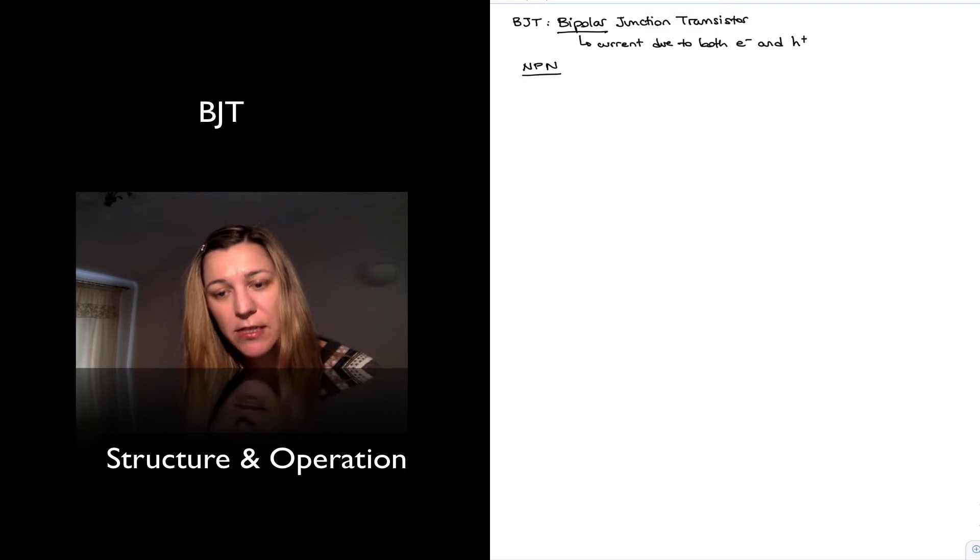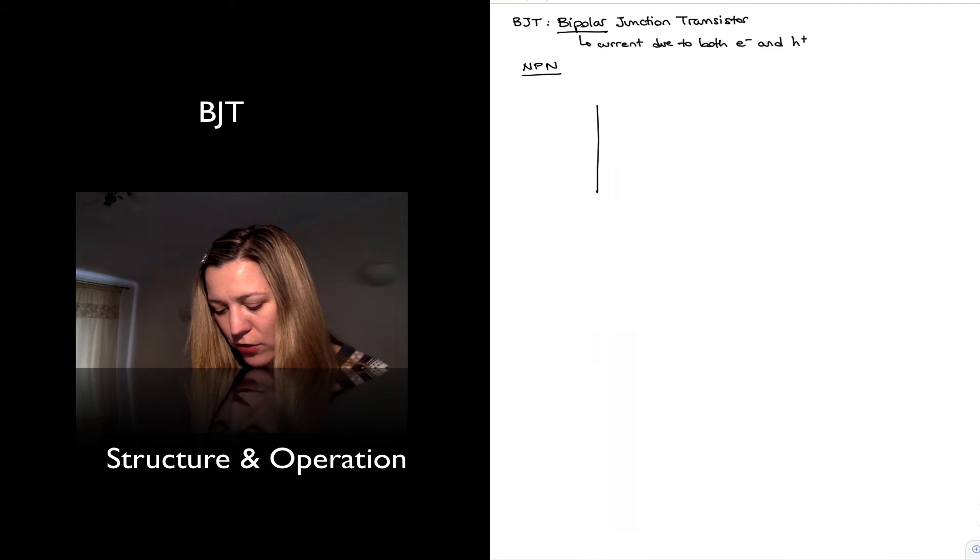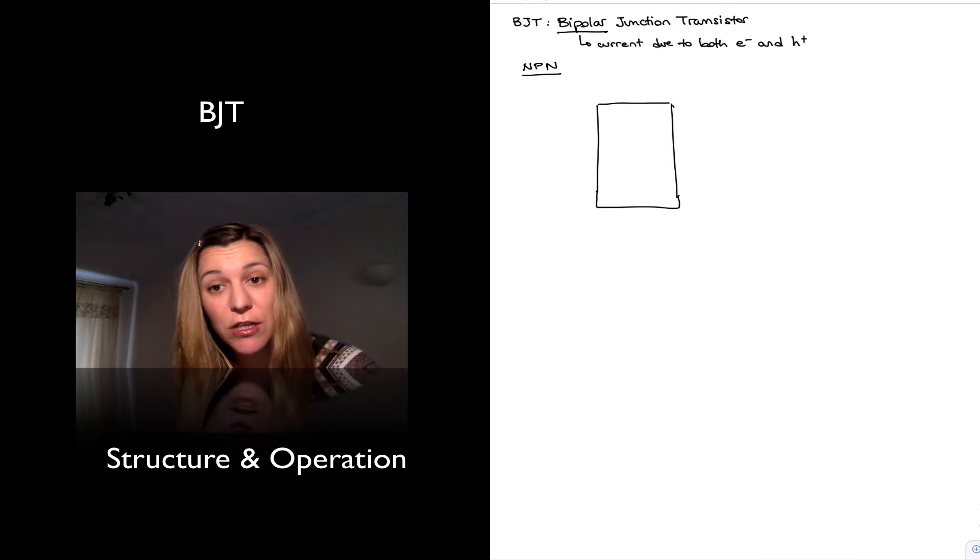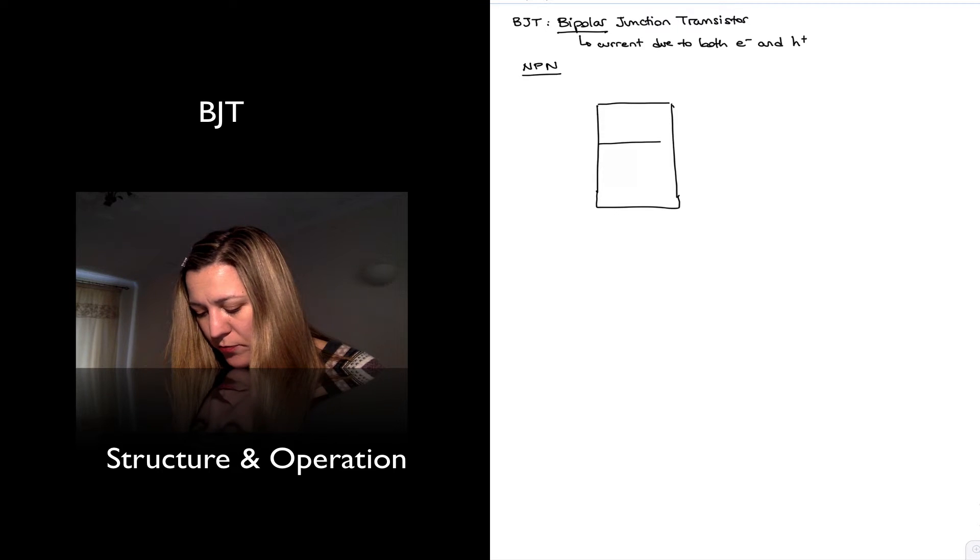As the name suggests, the structure of it consists of two back-to-back PN junctions. So an N region, a P region, and another N region.